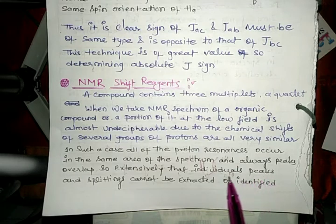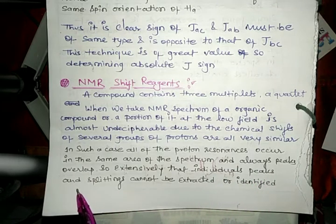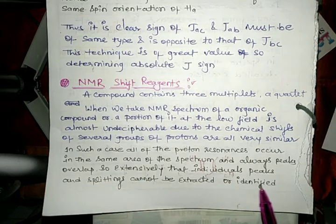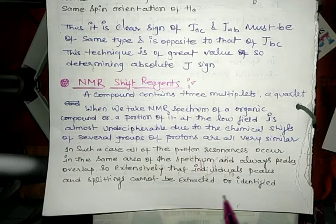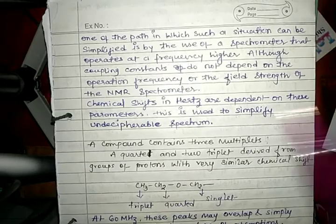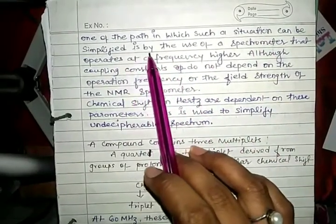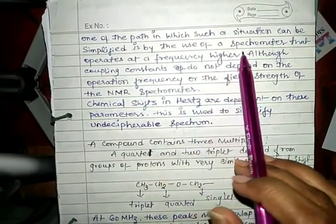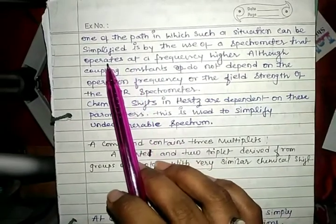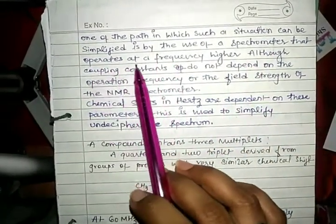Always peaks overlap so extensively that individual peaks and splittings cannot be extracted or identified. One of the paths in which such a situation can be simplified is by the use of a spectrometer that operates at a frequency higher.